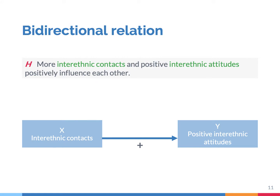Sometimes sociological theories argue that the impact goes in two directions. One may argue that interethnic contacts not only have a positive impact on interethnic attitudes, but that it also works in the opposite direction. This means that people who have more interethnic contacts develop more positive views about ethnic outgroups, and that when having such positive outgroup sentiments, people also develop more interethnic contacts. This is called a bidirectional relation or feedback relation.